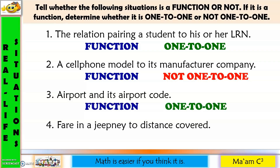Last one: fare in a jeepney to distance covered. We have a minimum fare in a jeepney that can cover 1 km, 2 km, 3 km, and 4 km at most. So that is a one-to-many correspondence. And a one-to-many correspondence is not a function.